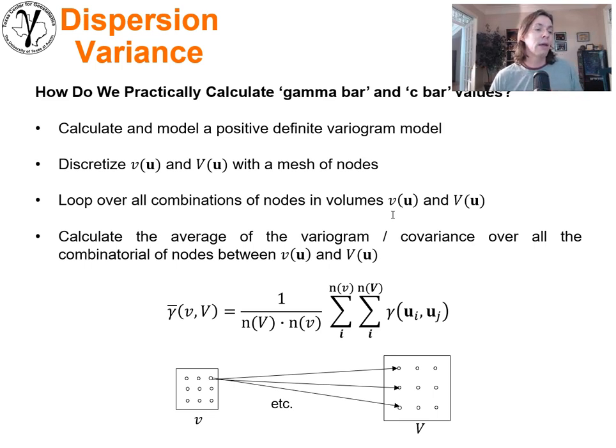To get a numerical approximation of our gamma bar or our covariance bar, what we call a c bar value for short, instead of a double integral we have a double sum where we're looping over all of the nodes in little v and all of the nodes in big V. We go to the first node in little v, we calculate the variogram between that node and all of the nodes in big V, then we go to the next node in little v and repeat that, so the full combinatorial of nodes between both little v and big V are covered. Take the average of that and the result would be a gamma bar value little v big V.